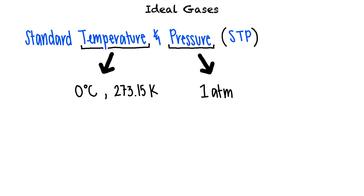Standard pressure is one atmosphere. This is equivalent to 101.3 kilopascals, 760 millimeters of mercury, or 760 torr.